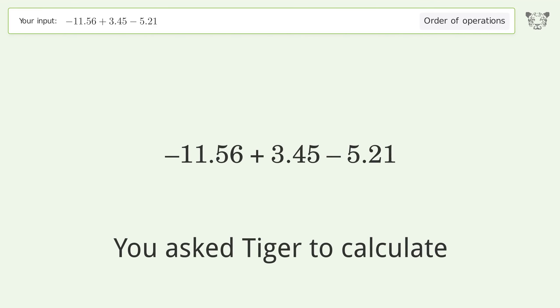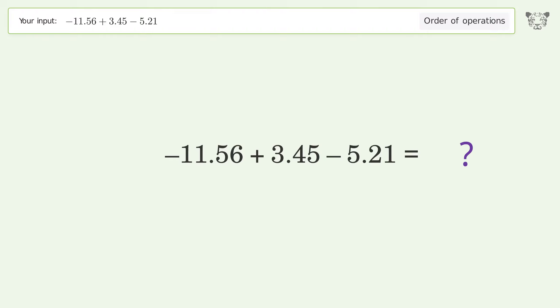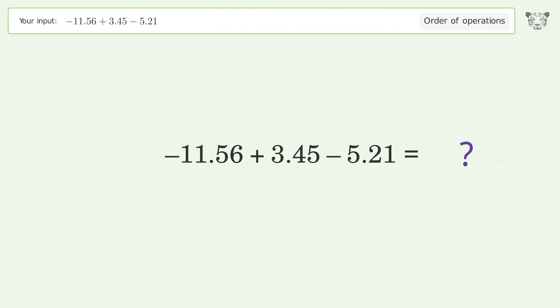You asked Tiger to calculate this. It deals with the order of operations. The final result is negative 13.32.